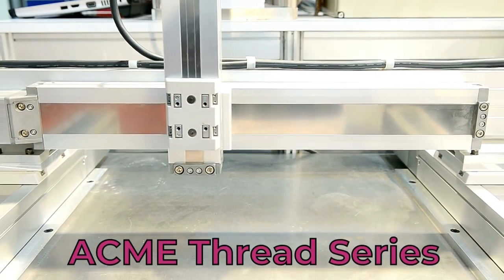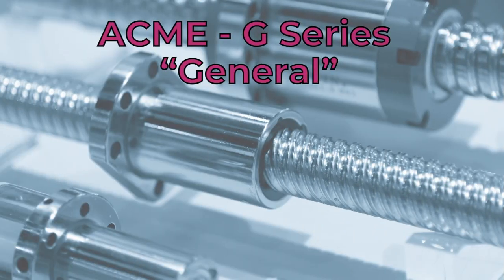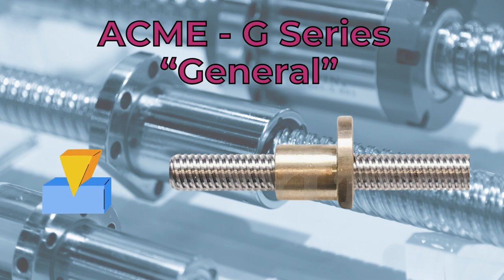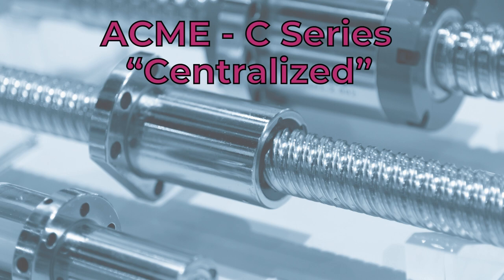Next, let's have a look at the three different series of ACME threads. The first is the general purpose series, represented by G, which is the most popular one. Wedging can occur under loads. Therefore, it is recommended for applications where the screw and nut are supported individually.